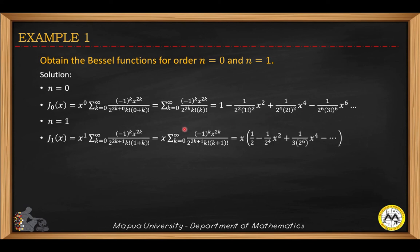For n equals one, you get x raised to one, with 2 raised to 2k plus one in the denominator, and (one plus k) factorial. This gives negative 1 raised to k times x raised to 2k, all over 2 raised to 2k plus one, times k factorial times (k plus one) factorial. Substituting indices starting from zero: when k equals zero you get one half, and continuing for k equals one, two, three, and so on.